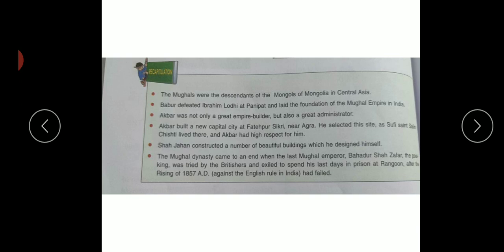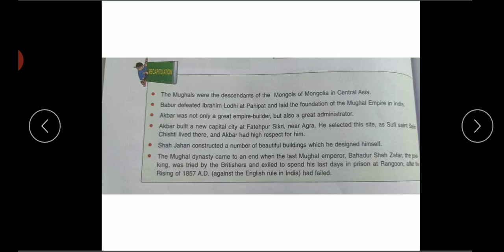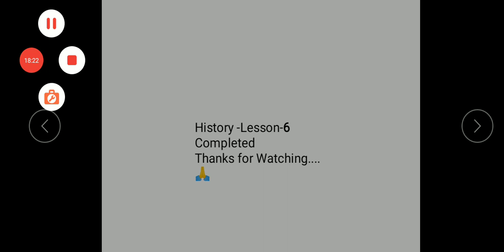Summary and recap: the Mughals were descendants of Mongols and Mongolians from Central Asia. Babur defeated Ibrahim Lodi in the Battle of Panipat and laid the foundation of the Mughal Empire. The Mughal emperors were not only great builders but also good administrators. The last Mughal emperor, Bahadur Shah Zafar, was sent to jail in Rangoon in 1857 after fighting against the British and failing. With this we have reached the end of the module - the chapter is complete. God bless you all, thanks for watching.